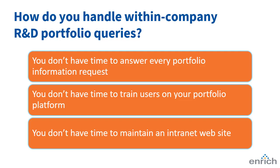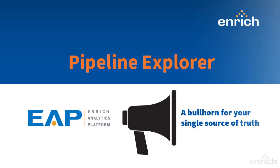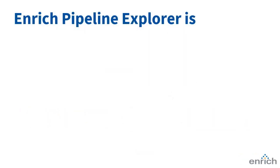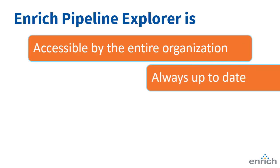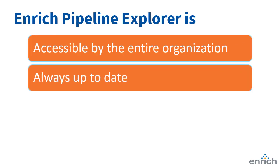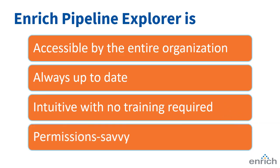Introducing the Enrich Pipeline Explorer — a bullhorn for your single source of truth. The Pipeline Explorer leverages the information in your single source of truth to provide a clearinghouse that is accessible by the entire organization, always up to date, without a need for manual updating. So intuitive that users need no training to use it, and permission savvy so that users only see the information meant for them.